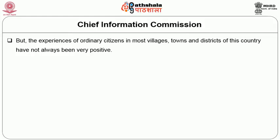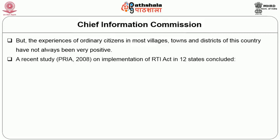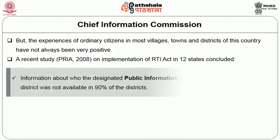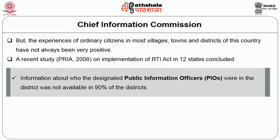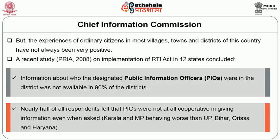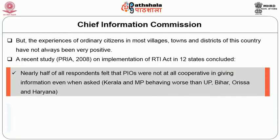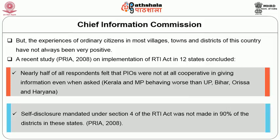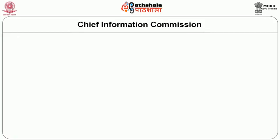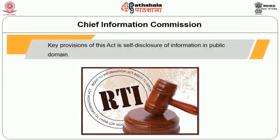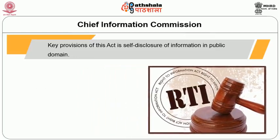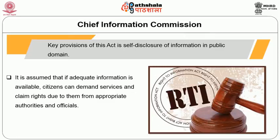However, the experiences of ordinary citizens in most villages, towns and districts of this country have not always been very positive. A recent study by PRIYA on implementation of the RTI Act in 12 states concluded that information about designated public information officers was not available in 90% of the districts, and nearly half of all respondents felt that PIOs were not at all cooperative in giving information when asked. Self-disclosure mandated under Section 4 of the RTI Act was not made in 90% of the districts in the study. One of the key provisions of the Act is self-disclosure of information in the public domain; however, the status of self-disclosure is rather poor nationwide.